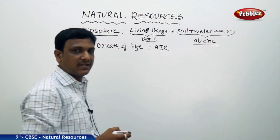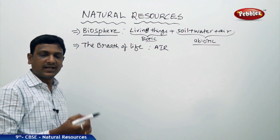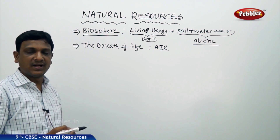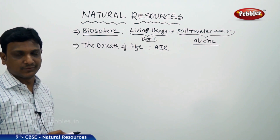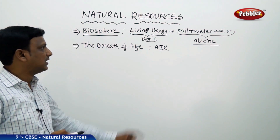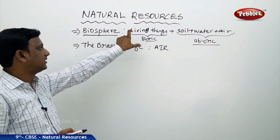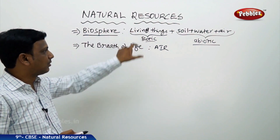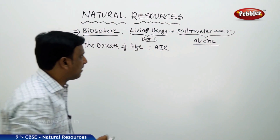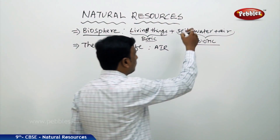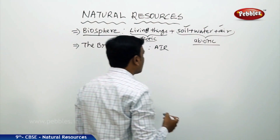Even within the biotic components, there are three groups: plants, animals, and microorganisms. So the biotic components include plants, animals, and microorganisms. The abiotic components include soil, water, and air.